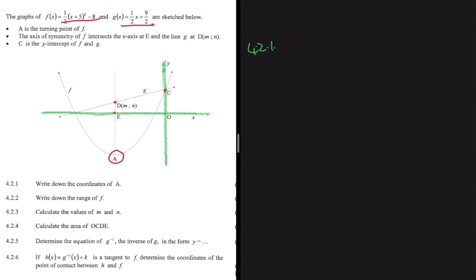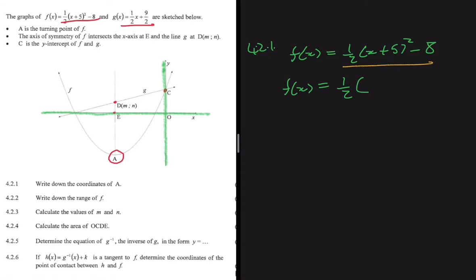For 4.2.1, let's write down the coordinates of A. A is the turning point of f. We have f(x) = ½(x+5)² - 8. I'm going to expand this expression to find the coordinates of A. So f(x) = ½ times [x·x = x², x·5 = 5x, multiplied by 2 gives 10x, and 5·5 = 25].